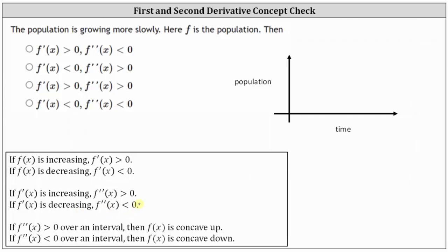And if we're looking at a graph, if the second derivative is positive, the function is concave up. And if the second derivative is negative, the function is concave down.